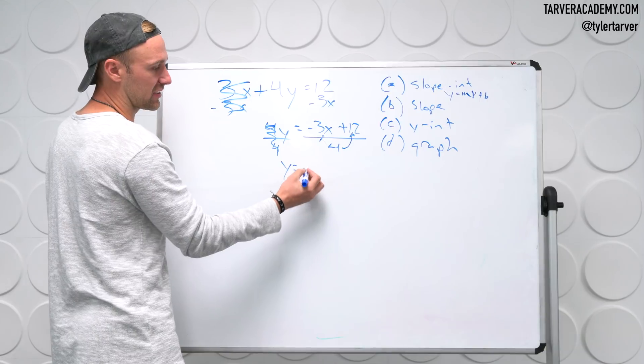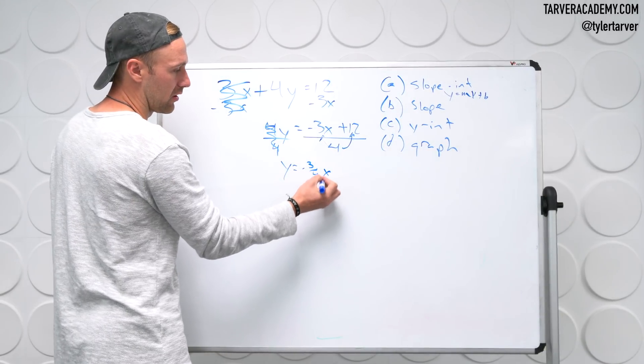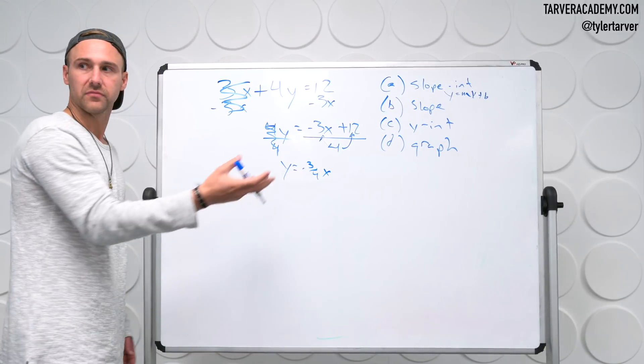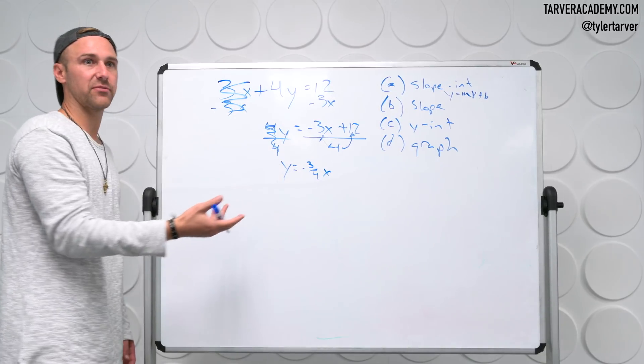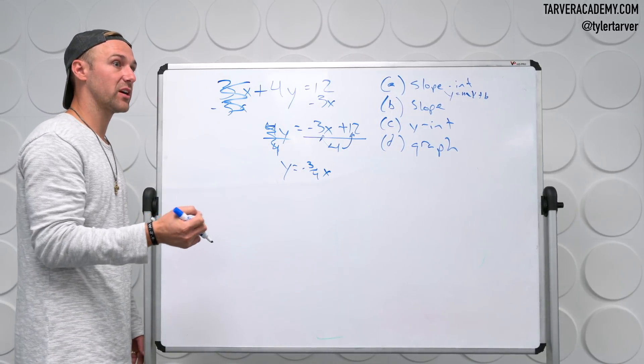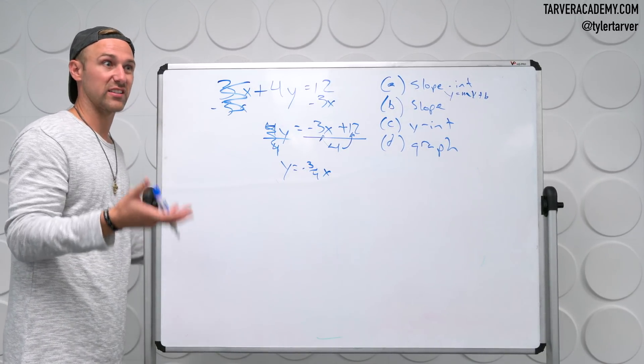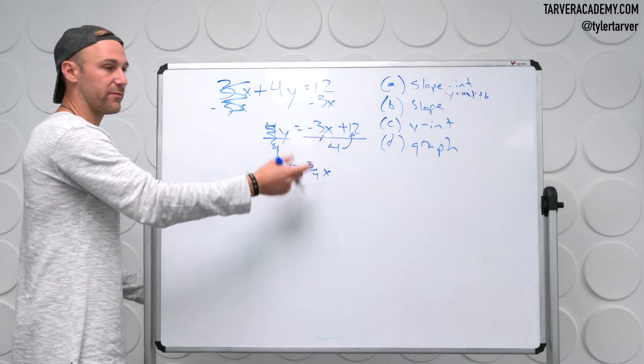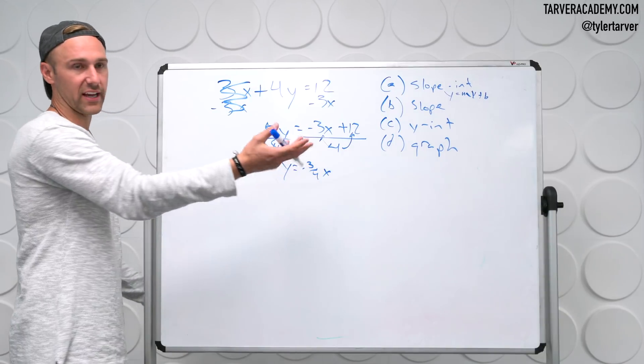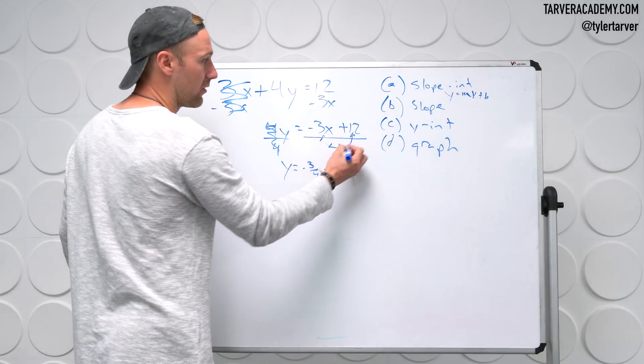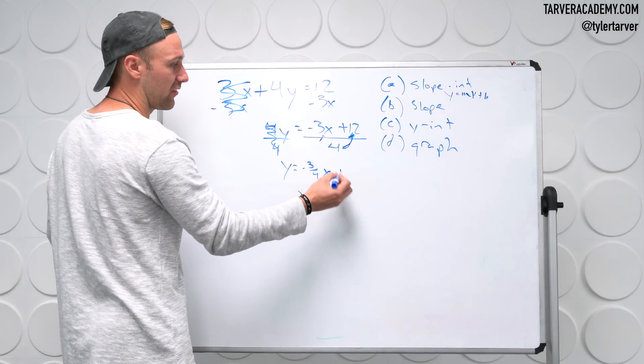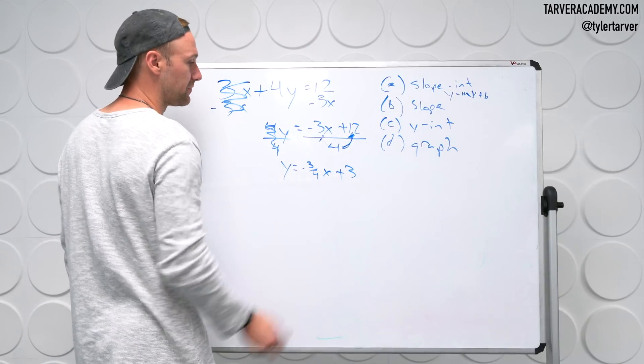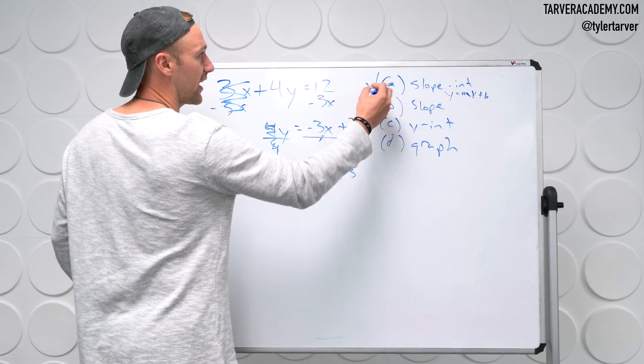So this one's going to just stay negative 3 over 4. Why do we keep it as a fraction? Negative 0.75 is prettier, but we keep it as a fraction because it's a rise over run. It's a slope. We want to be able to look at it and go, oh, we need to rise negative 3 and then run 4, or rise 3 run negative 4. And then divide that there. 12 divided by 4 is 3. Boom. Check. Done.